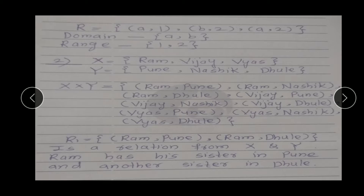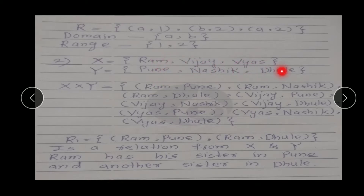Next example: let set X = {Ram, Vijay, Vyaas} — यहाँ पर हमने 3 persons लिए हैं. Our set capital Y = {Pune, Nashik, Dhule} — हमारा जो set Y है यहाँ पर हमने 3 different places लिए हैं. So, X cross Y = {(Ram, Pune), (Ram, Nashik), (Ram, Dhule), (Vijay, Pune), (Vijay, Nashik), (Vijay, Dhule), (Vyaas, Pune), (Vyaas, Nashik), (Vyaas, Dhule)}. So it is our set X cross Y.